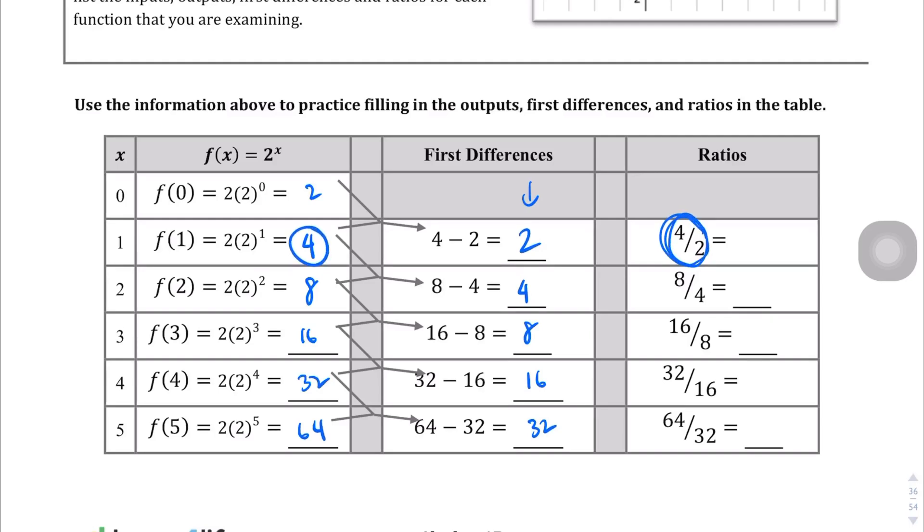So where do I get these numbers? It's the ratio of this first term divided by the 0 term. So 4 divided by 2 is 2, and then 8 divided by 4 is also 2. 16 divided by 8 is also 2, 2, and 2. And so you'll see that the ratios of these function values are equal. Therefore, we can say that this is a table of an exponential function.